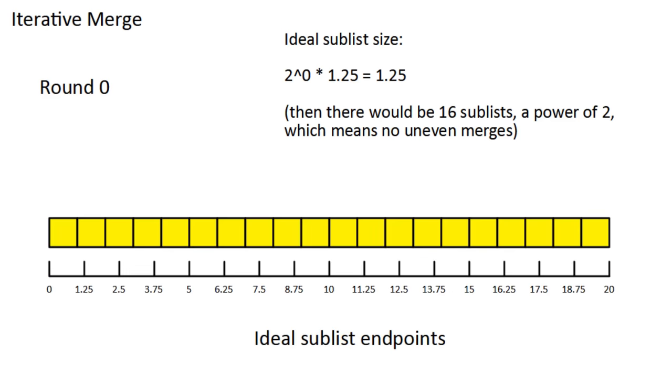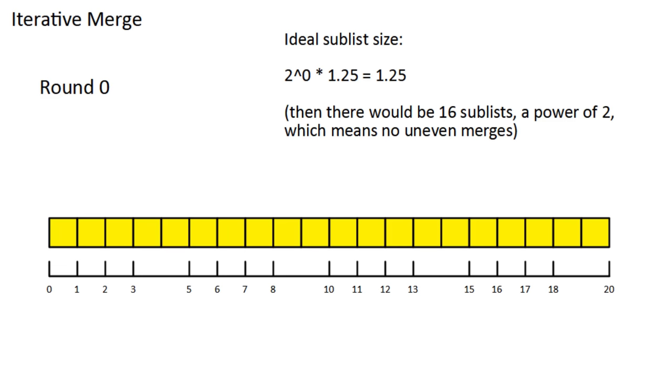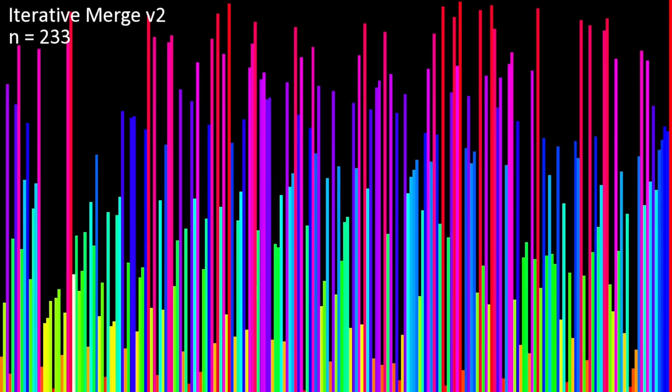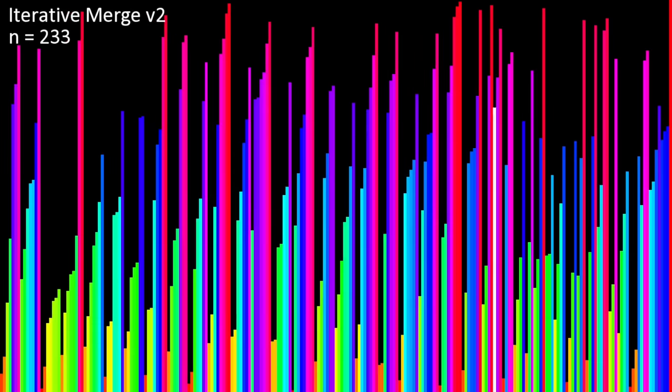This way, you might have a few uneven merges, but the sublist sizes differ by at most 1. Then the sublists will be the same ones you get from regular Merge Sort.